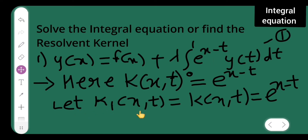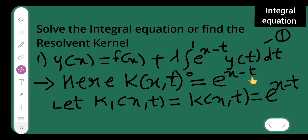Let k₁(x,t) be defined. k₁(x,t) = k(x,t), and k(x,t) = e^(x−t).